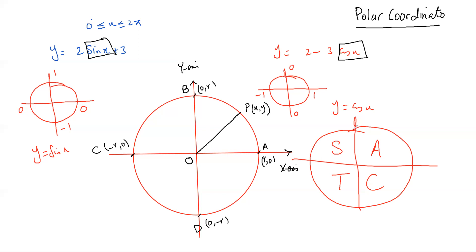We have started this discussion because mastering polar coordinates depends entirely on trigonometric functions. The question I ask my students is whether they are really clear about why all of sine, cosine, and tangent are positive in the first quadrant, why only sine is positive in the second, why only tangent is positive in the third, and why only cosine is positive in the fourth.